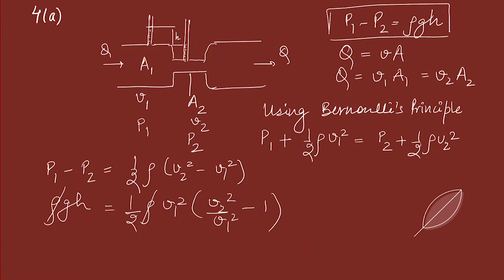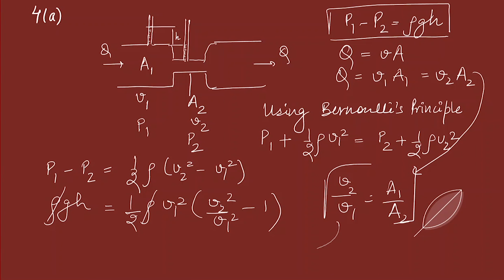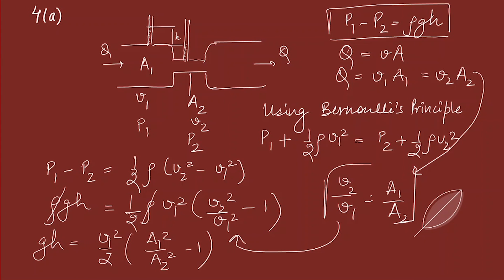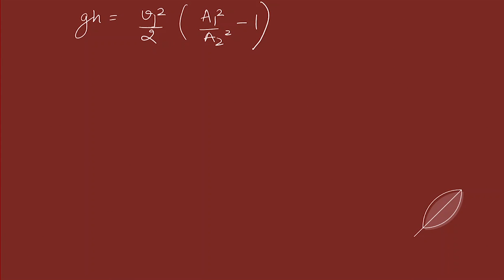Cancelling rho, and substituting v2/v1 = a1/a2 from the continuity equation, we get: gh = ½·v1²·(a1²/a2² - 1). Rearranging, v1² = 2gh·a2² / (a1² - a2²).